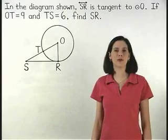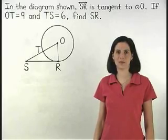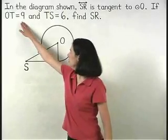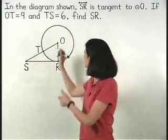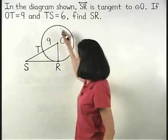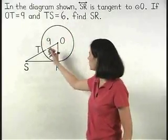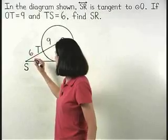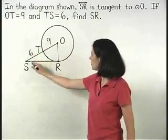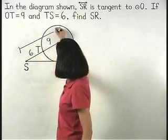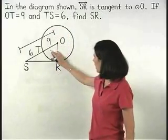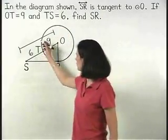Our first step in this problem is to label the diagram. We know that OT equals 9 and TS equals 6. Therefore, OS equals 9 plus 6 or 15.